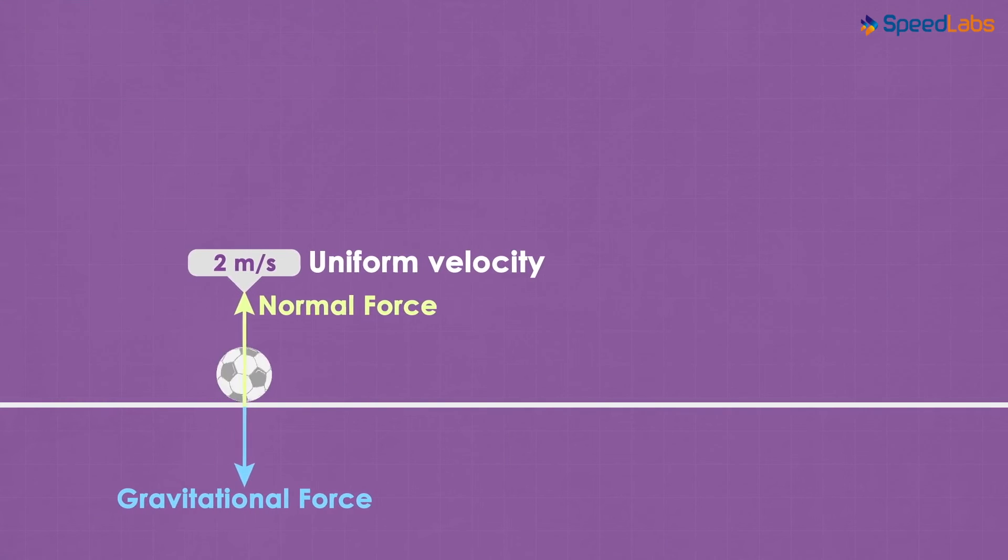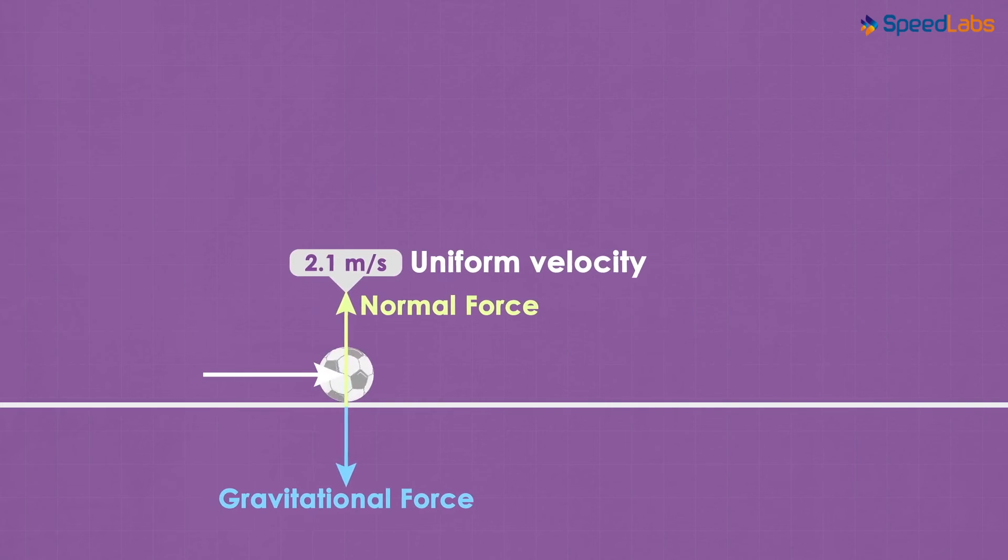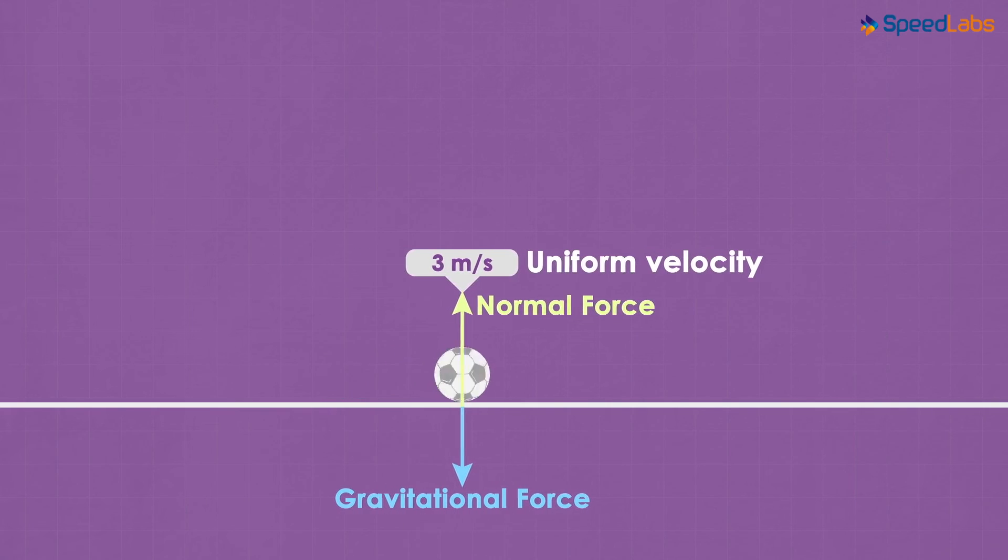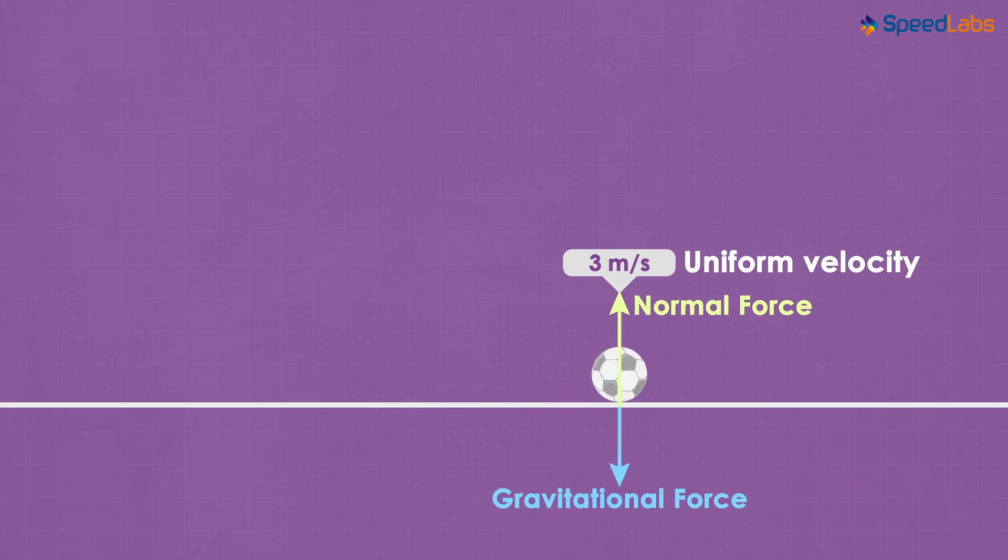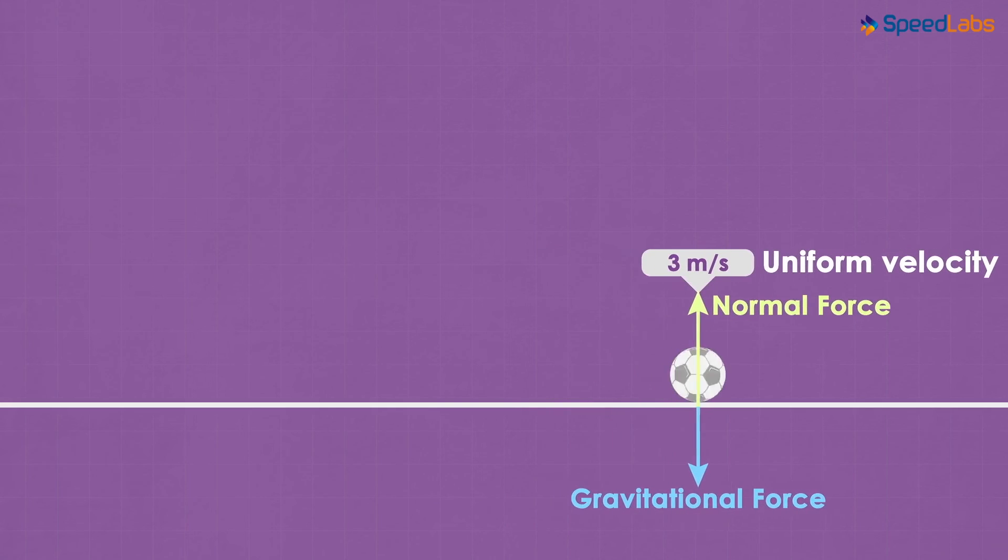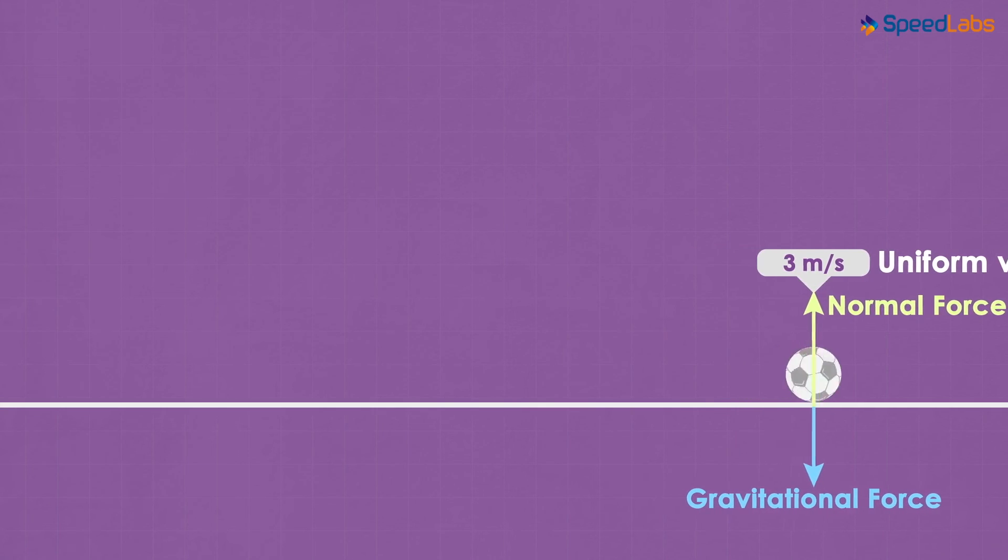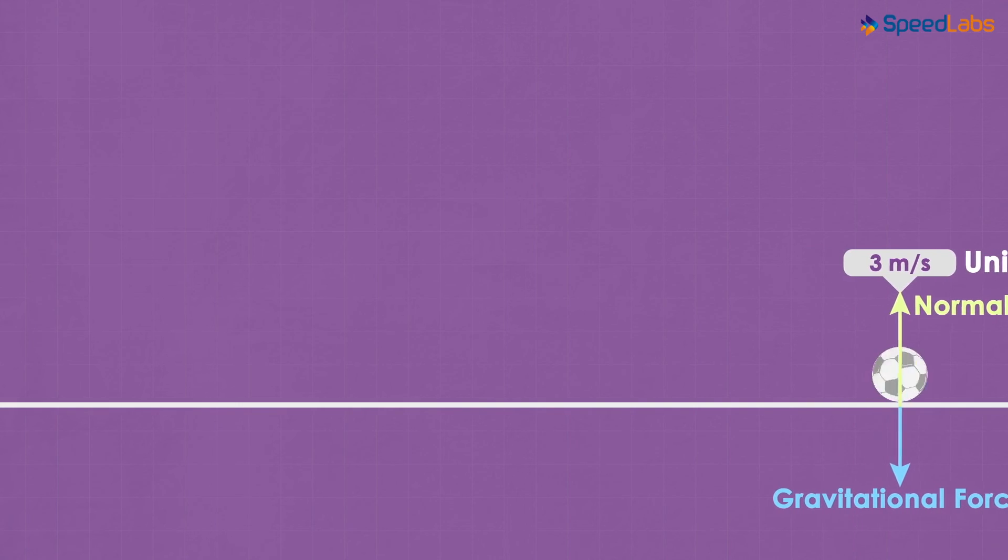Now when this ball is moving at 2 meters per second and there is an external force applied from the left, what will happen? Yes, the ball will accelerate. Its velocity will change. Let's say the velocity changes to 3 meters per second after this external force is applied. After that, the ball will continue to move at 3 meters per second unless acted upon by another external force.